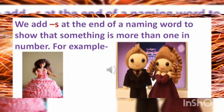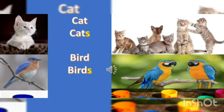We add 's' at the end of a naming word to show that something is more than one in number. For example: doll becomes dolls, cat becomes cats, bird becomes birds, cup becomes cups.